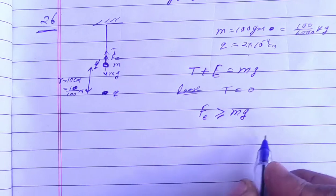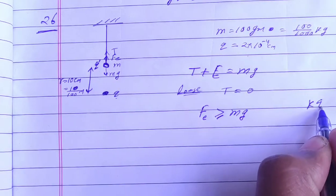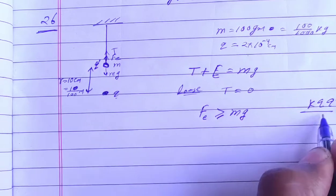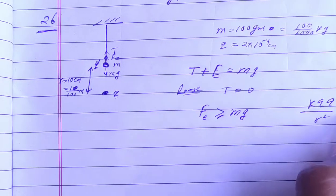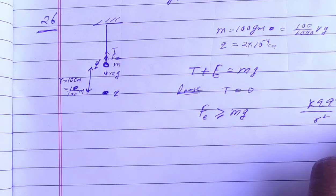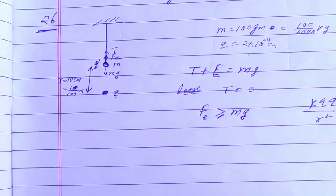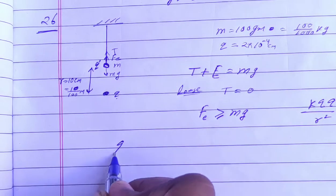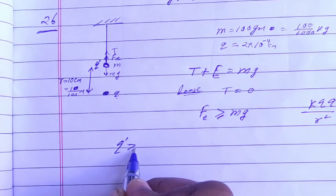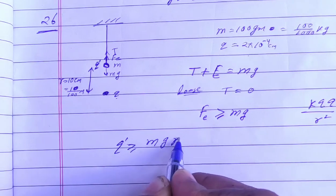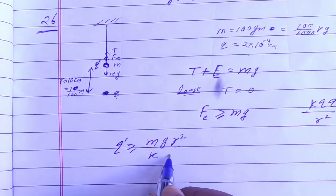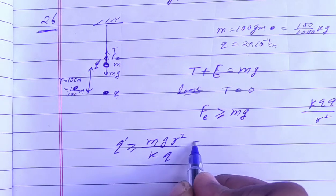The electrostatic force can be written as KQq'/r², and this should be greater than or equal to mg. We need to find the value of q'. Solving for q', we get q' ≥ mgr²/Kq. Now let's substitute the values.